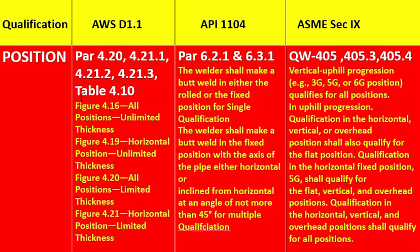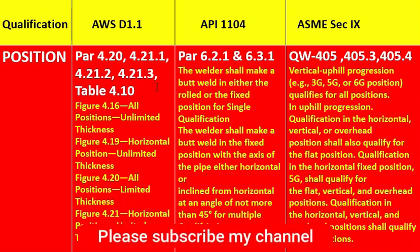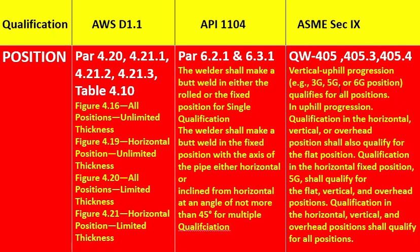In ASME Section 9, QW-405, 405.3 and 405.4: vertical uphill progression — meaning 3G, 5G, or 6G position — qualifies for all positions. Qualification in the horizontal, vertical, or overhead position shall also qualify for the flat position. If a welder is qualified in horizontal, vertical, and overhead positions, they are qualified for all positions.